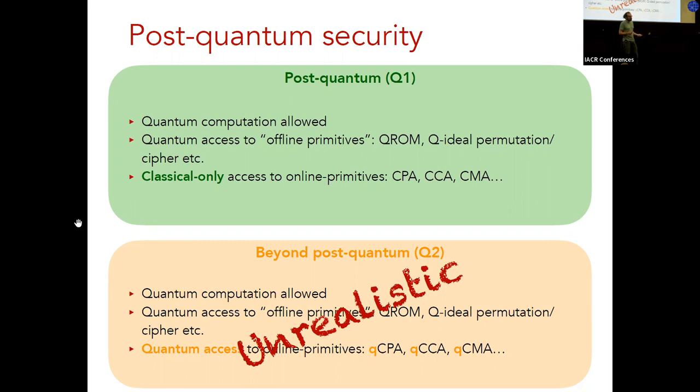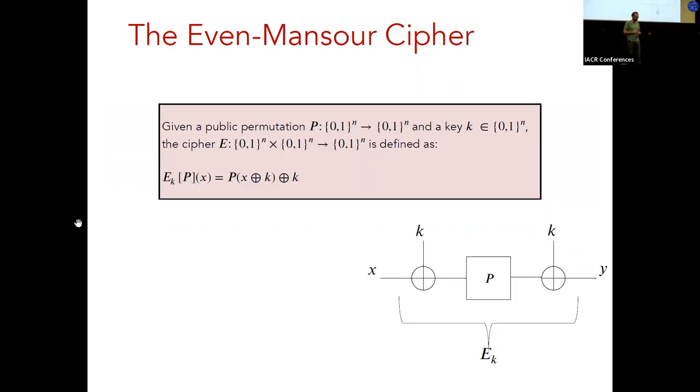So in summary, from a provable security perspective, Q2 is somewhat unrealistic and Q1 should be sufficient. One interesting challenge in the setting where there's an idealized primitive in the Q1 model is that there's a mix of classical and quantum oracles, because offline primitives are quantum and online primitives are classical. And this will feature in the Even-Mansour setting.